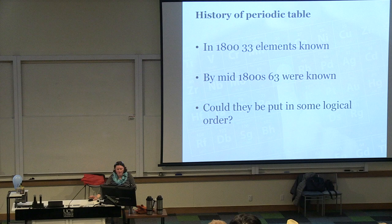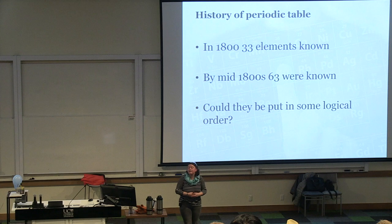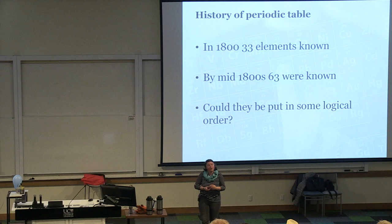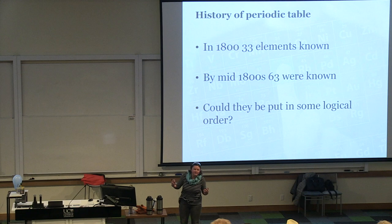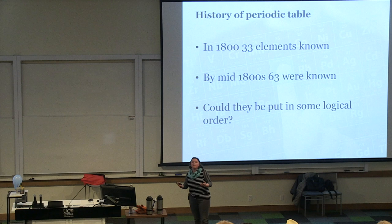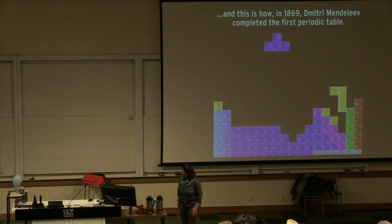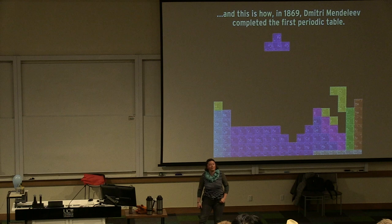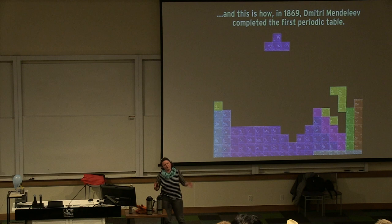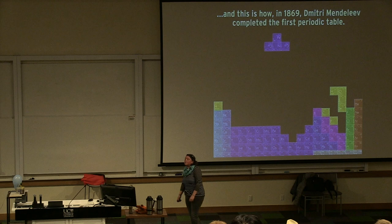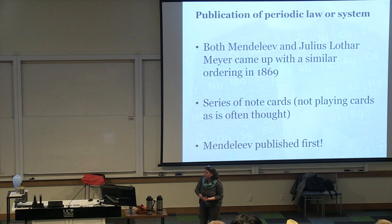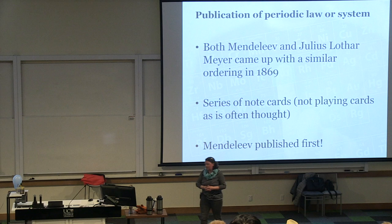In the early 1800s around 33 elements were known. By the mid-1800s we were up to 63 elements. As we've already demonstrated, trying to remember them all is a bit of a challenge — so can we put them into some sort of logical order? Mendeleev wasn't the first to consider some kind of ordering, and he certainly isn't the last. But around about the same time, both Dmitry Mendeleev and Julius Lothar Meyer came up with a similar ordering, which has led to what we now consider to be the periodic table, published in 1869.